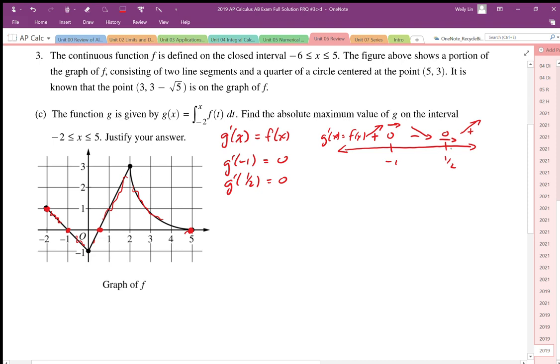So we can eliminate that one half as a potential maximum because that is a local minimum there.